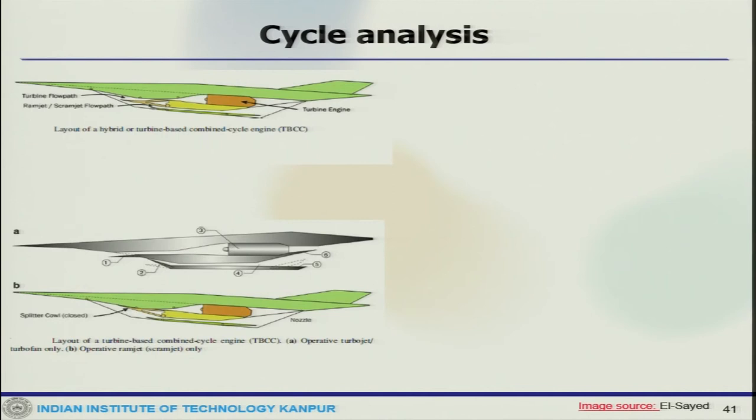Now we will move to another important topic, turbine-based combined cycle (TBCC). Why we are doing so much detail analysis on turbofan? Because turbofan engines are primarily the engines which are extensively used in today's life, whether it is civilian application or fighter application. This is a layout of a hybrid or turbine-based combined cycle, powering a future supersonic or hypersonic vehicle.